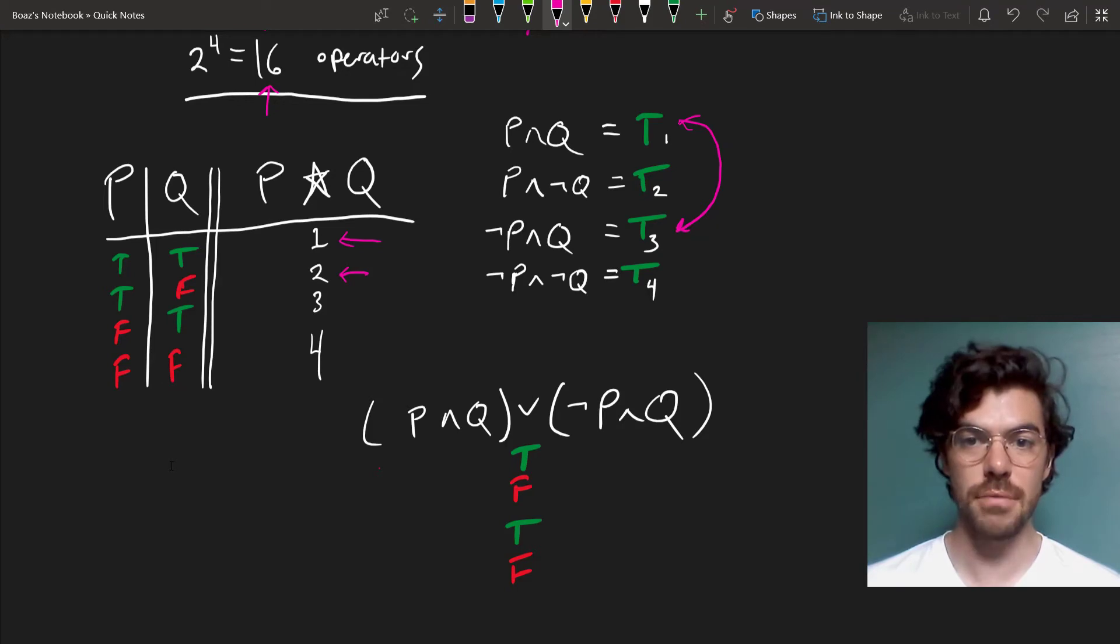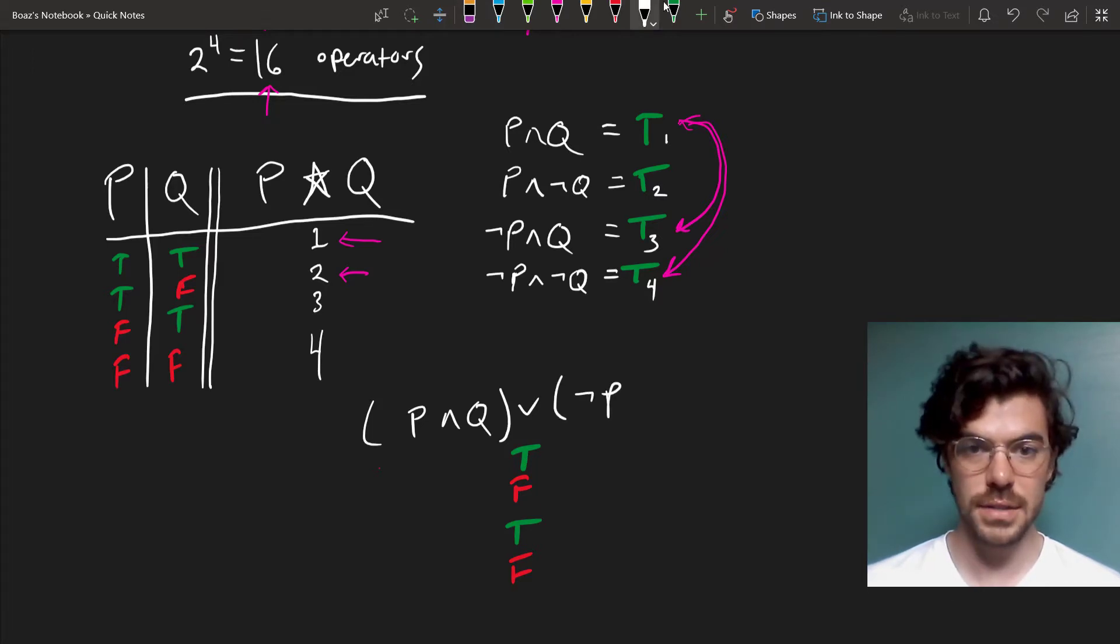Alternatively, if we wanted to do first and fourth rows, we would make it a disjunction of, instead of this one here, the fourth sentence in our list, NOT P AND NOT Q, and that will make it true in the first and the fourth and false in the second and third.